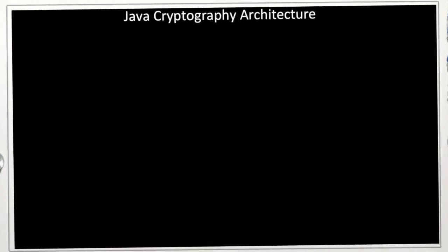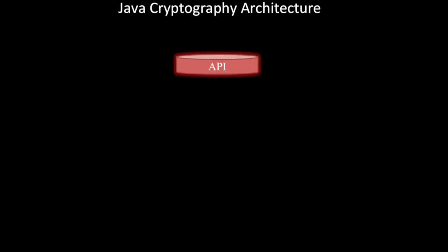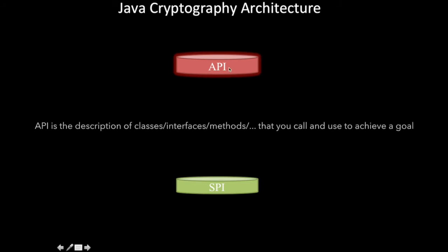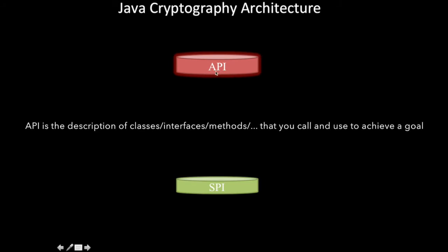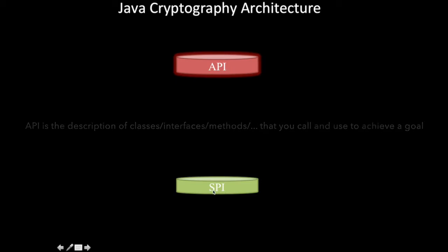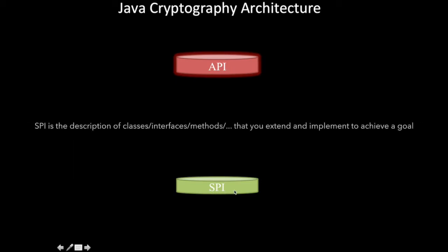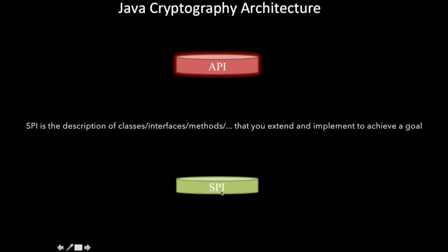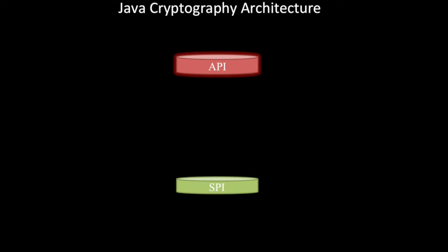Before moving to this architecture, let's understand two important concepts: API and SPI. API is the description of classes, interfaces, and methods that you call to achieve a goal. SPI stands for Service Provider Interface — this is a description of classes, interfaces, and methods that we extend or implement to achieve a goal. This is the fundamental difference between API and SPI.